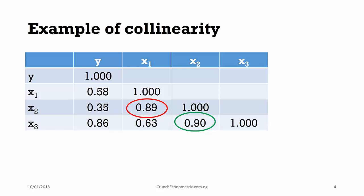That of 0.90 represents the collinearity between the third regressor and the second regressor. So, in this relationship, we have two separate bivariate relationships exhibiting high collinearity.